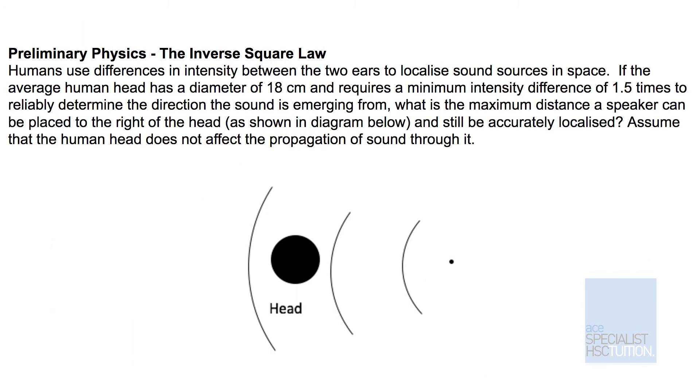In this question we have a sound source placed to the right of a person's head as shown in the diagram. Since this sound source is on the right, the sound travels a smaller distance to reach the right ear than the left ear. We're told that in order for the person to tell that the sound is coming from the right, we need a difference in intensity of at least 1.5 times between the two ears.